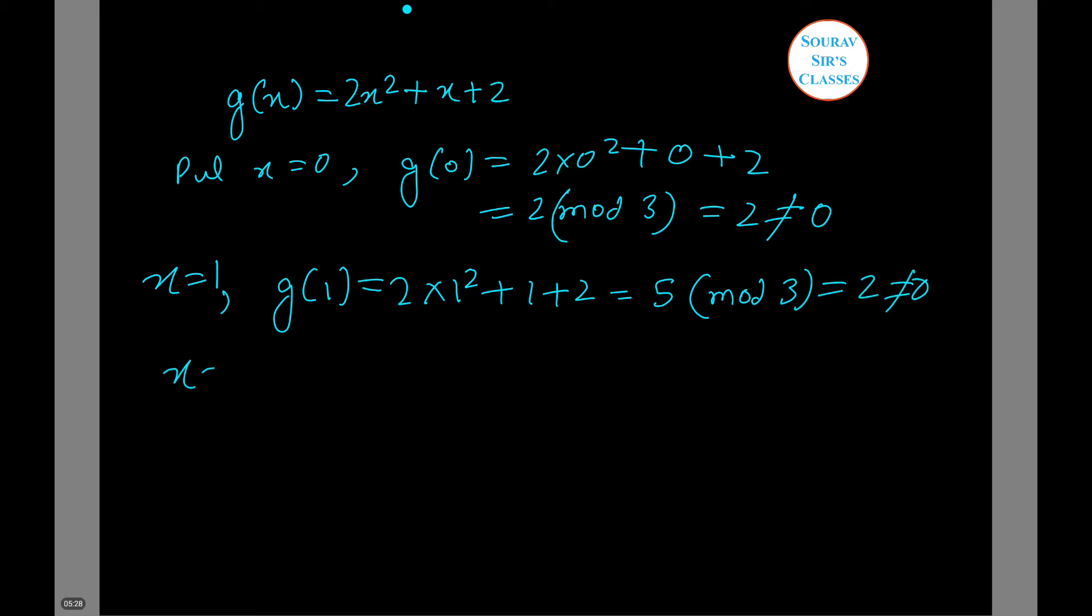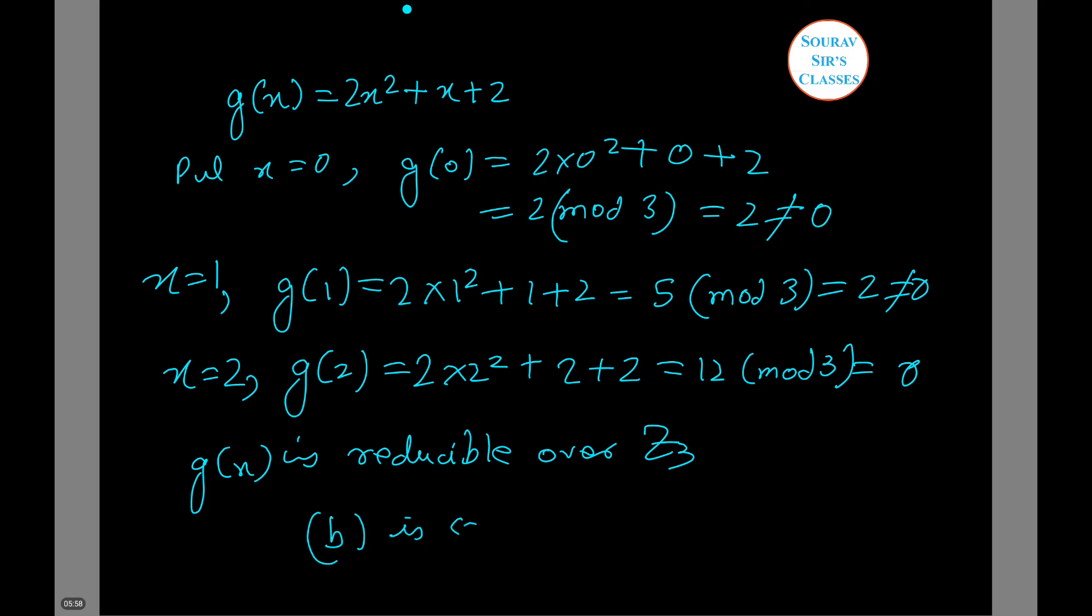Now putting x equals 2, g(2) equals 2 times 2 squared plus 2 plus 2, which equals 12 mod 3, which equals 0. Hence, g(x) is reducible over Z_3. Therefore, option B is correct.